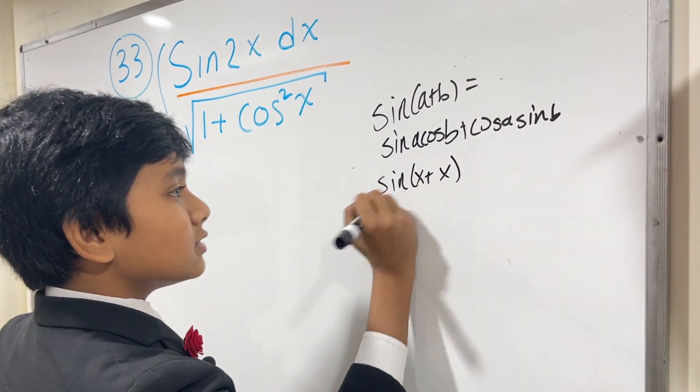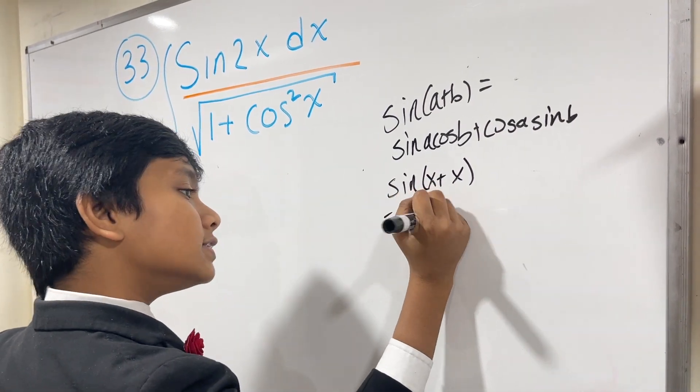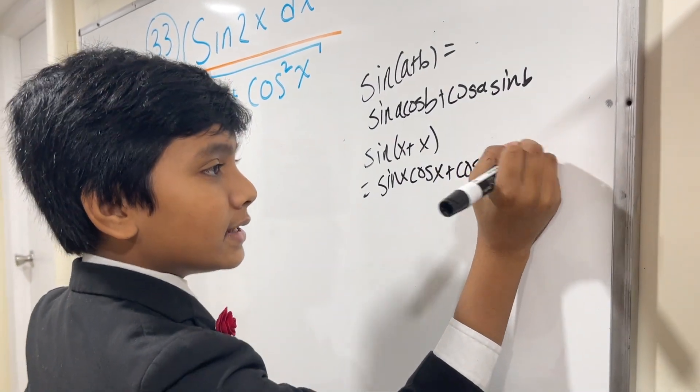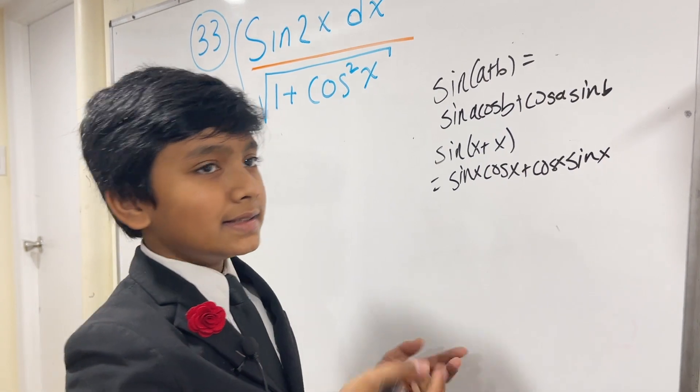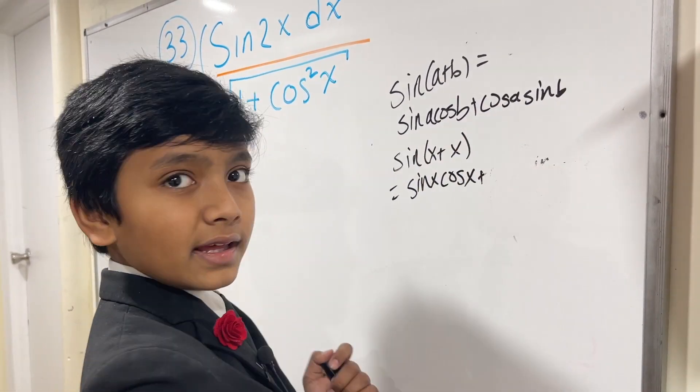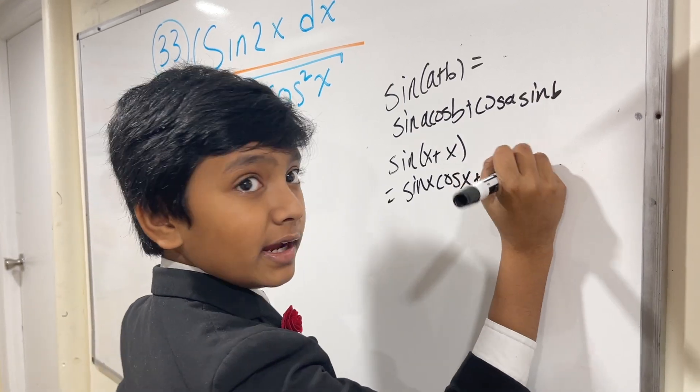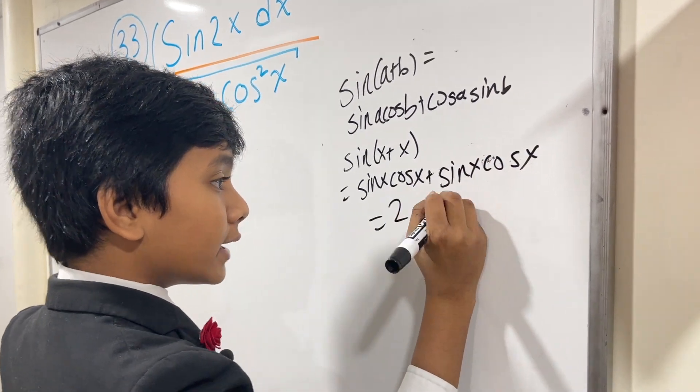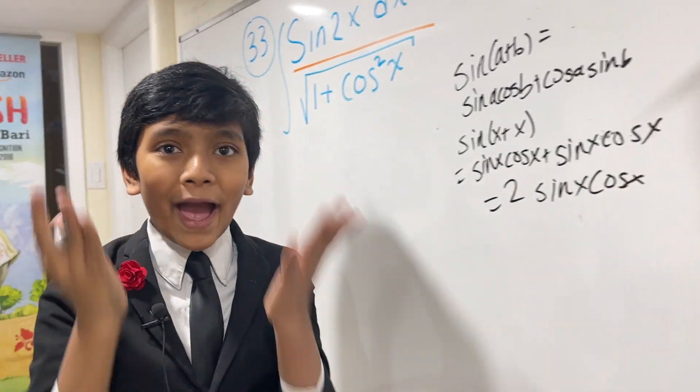That's correct. So that's sine x cos x plus cos x sin x. And using the amazing properties of the commutative property, this is actually sine x cos x. So this is just 2 sine x cos x. Wow!